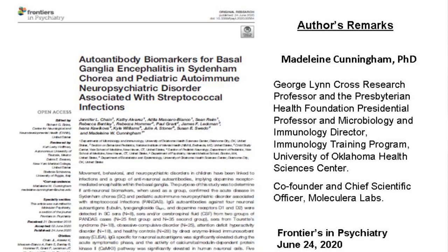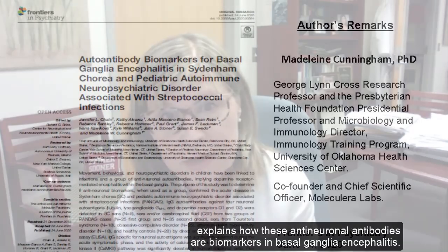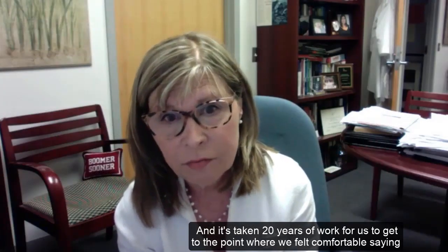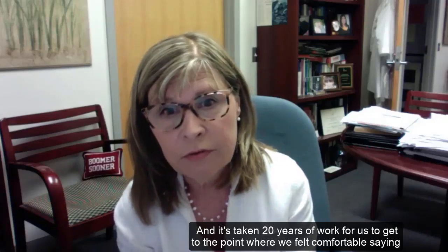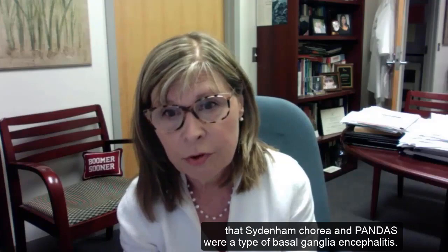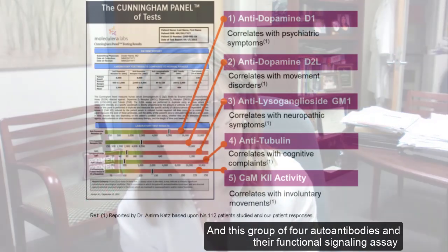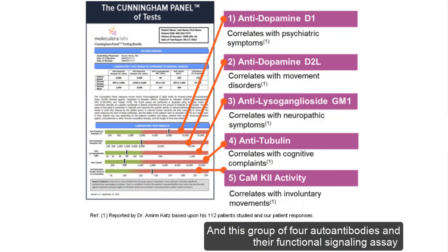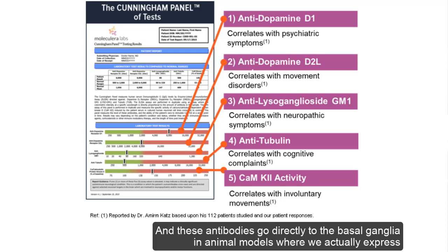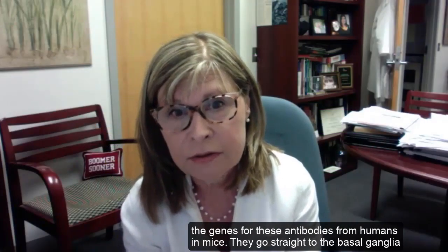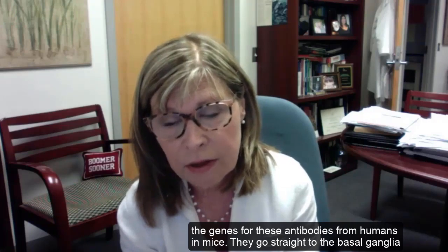The last paper published just a few days ago explains how anti-neuronal antibodies are biomarkers in basal ganglia encephalitis. It's taken 20 years of work to reach the point where we felt comfortable saying that Sydenham's chorea and PANDAS were a type of basal ganglia encephalitis. This group of four autoantibodies and their functional signaling assay detects basal ganglia encephalitis in children, and these antibodies go directly to the basal ganglia in animal models — where we express genes for these antibodies from humans in mice — and go straight to the basal ganglia and attack neurons.